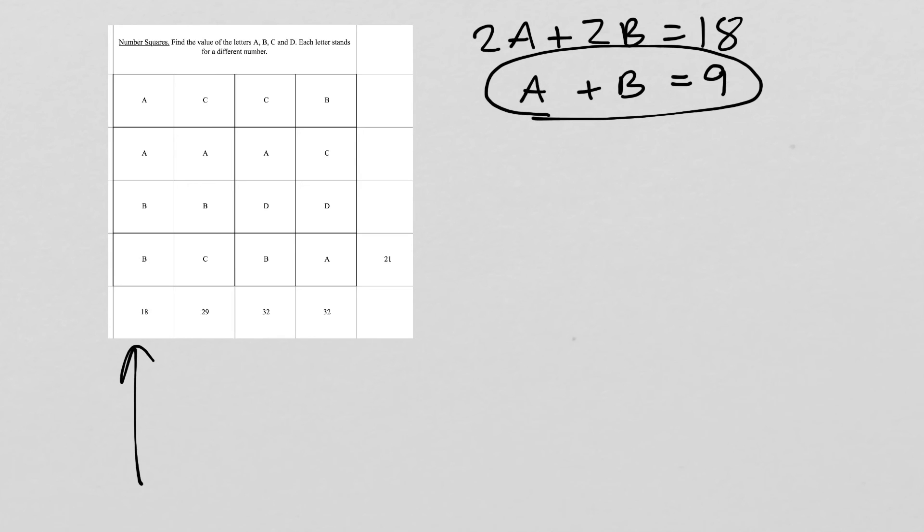Then to simplify, I'm going to divide everything by 2 because every number is even here. So I get a plus b equals 9. And I'm going to use that to substitute into another column where a and b exist. And that is going to be here. So instead of a and b, I can write 9. So my new equation from this column is c plus c, 2c plus the a and b. So plus 9 equals 29.